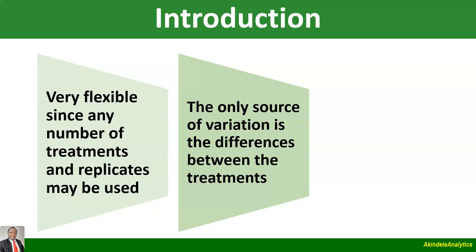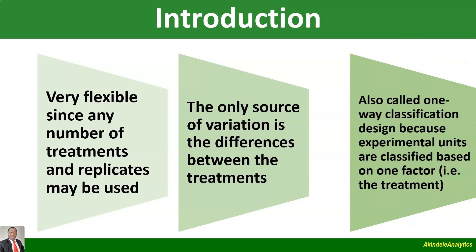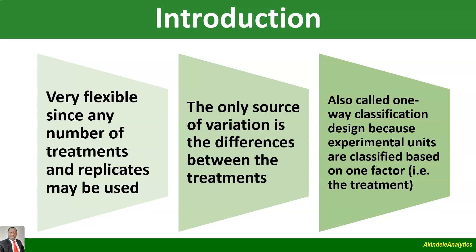The only source of variation in completely randomized design is the differences between the treatments. The treatment is the only thing leading to variation. In every experiment we have experimental materials or experimental units, and there is the treatment. In CRD, the experimental units are homogeneous, so there is no variation as a result of the experimental units — the only source of variation is due to treatments.